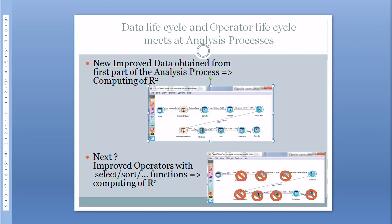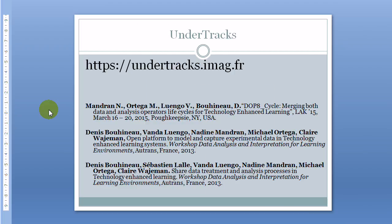So at the end, what we would get is a straightforward analysis process with only three operators, but also new operators, new improved data, and potentially new improved operators. And that is mostly possible thanks to the fact that all these elements — data, operators, and analysis processes — were all together in the same environment, with the possibility to act on each one, improve, change, and edit all of them. And that's the end of this third video, a demonstration about UnderTracks.